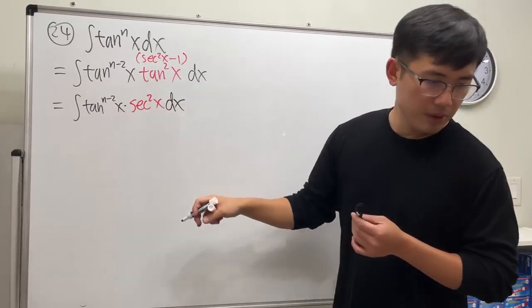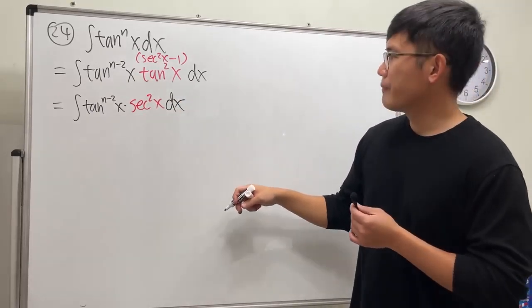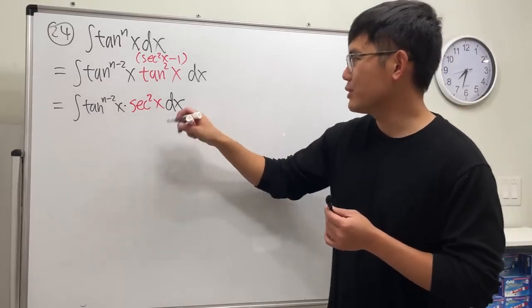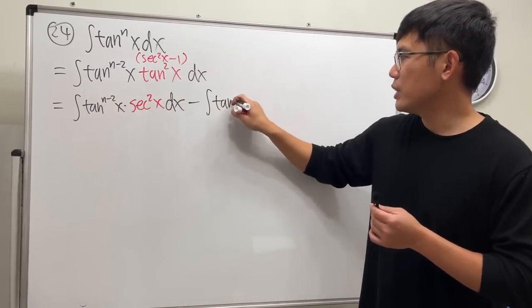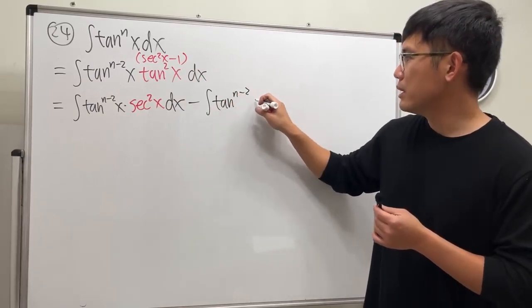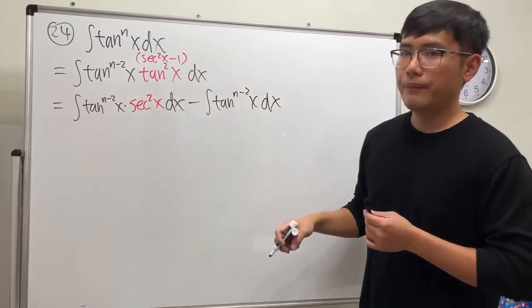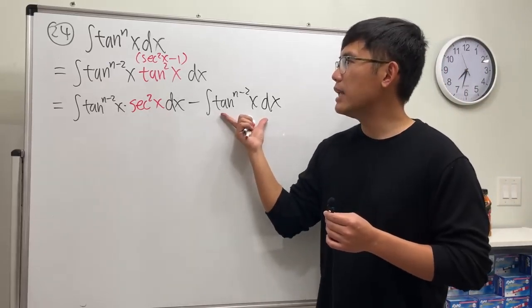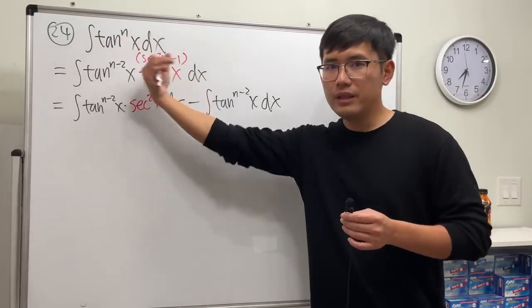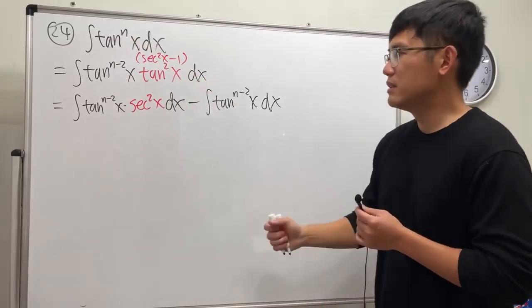Next, the next one I think... I don't have enough space, I'm just going to write it down. Minus this times that, so we have tangent to the n minus 2, x dx. And you see this is actually great, because this right here has less power than the original, so it's the power reduction, right, that's very good.